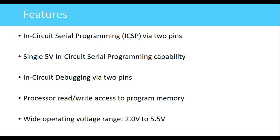In-circuit serial programming (ICSP) via two pins allows the PIC controller to be programmed serially while remaining in the system — no need to remove the IC for programming. This can be done with a single 5-volt supply. There is also in-circuit debugging (ICD) via two pins, enabling program debugging in hardware, where single instructions can be executed on actual hardware and output checked, similar to software debugging.